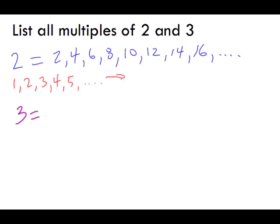Now let's go to finding the multiples of 3. As we said before, we take the number 3 and we are going to multiply it by 1, then by 2, then by 3, and so on. So 3 times 1 is 3, 3 times 2 is 6, 3 times 3 is 9, 3 times 4 is 12, 3 times 5 is 15.